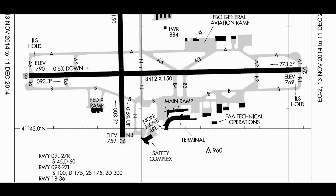The ground controller comes back: 'November 123 Alpha Bravo, taxi to runway 36 via Bravo, November.' Here's where you get to be a parrot on their shoulder. You say: 'Taxi to runway 36 via Bravo, November, November 123 Alpha Bravo.' You read back the instruction first, then your tail number at the end, to clarify it's the right plane reading back the right clearance.